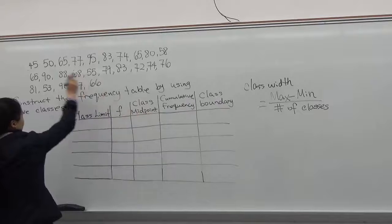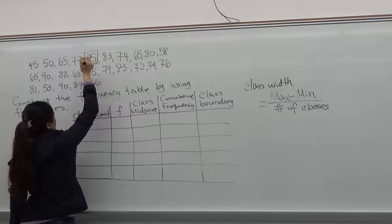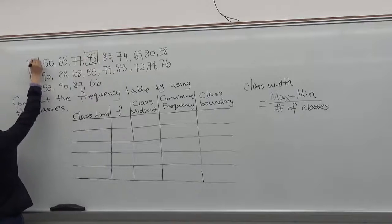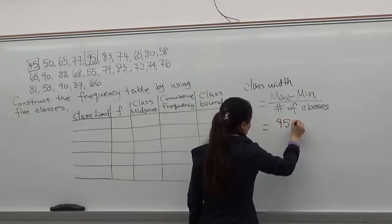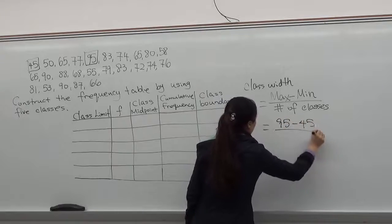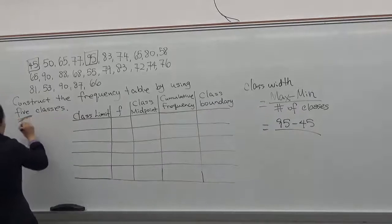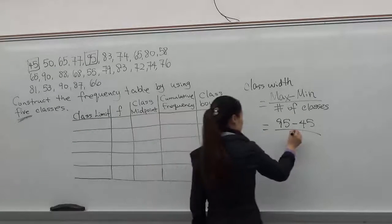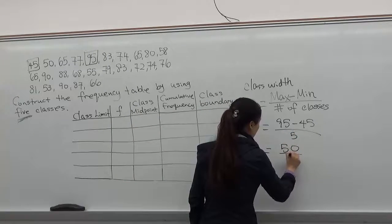By looking at those numbers, we'll know that 95 is our max and 45 is the smallest number. So we will have to use 95 minus 45 divided by the number of classes they give to you, which is 5. 95 minus 45 is 50 divided by 5.